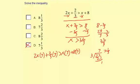2x times 3 is 6x. 2/3 times 3 over 1, 2 times 3 is 6 divided by 3, and then you just get 2. So plus 2 greater than x times 3 is 3x plus 8 times 3 which is 24.